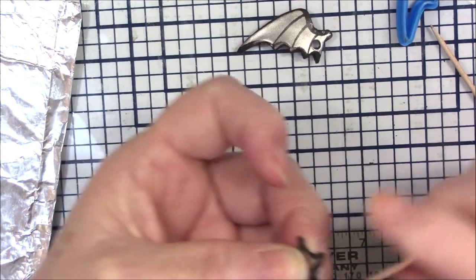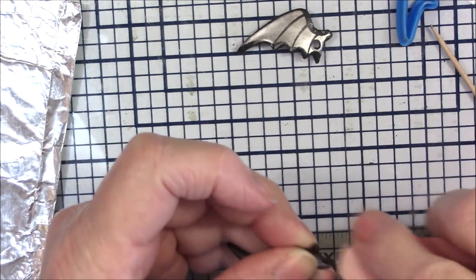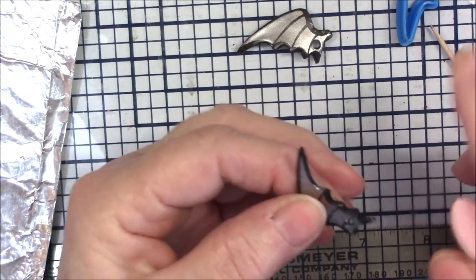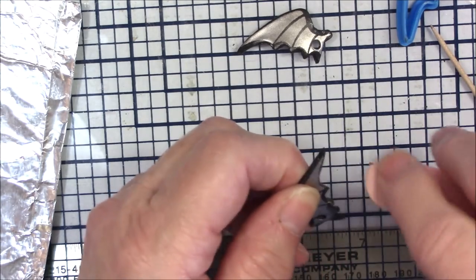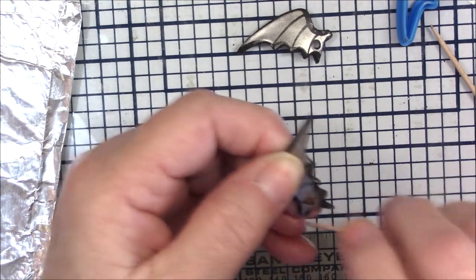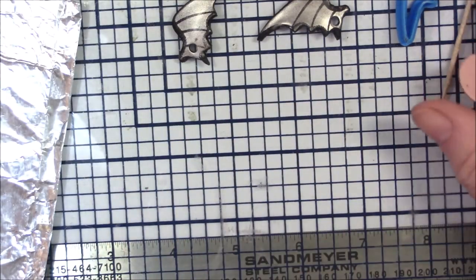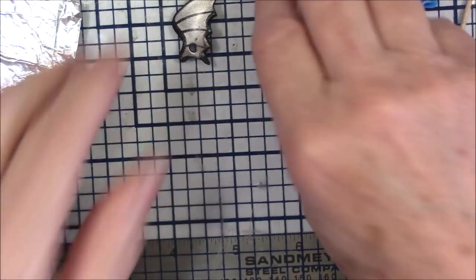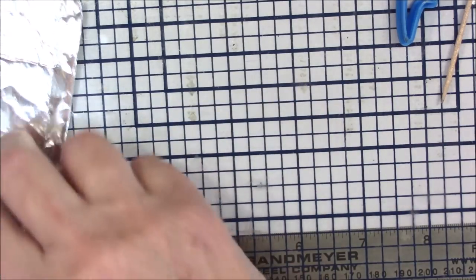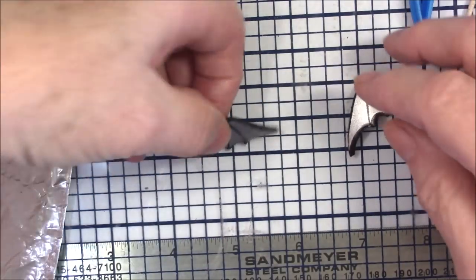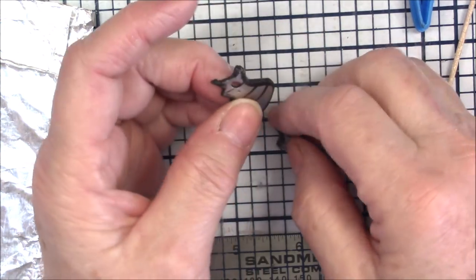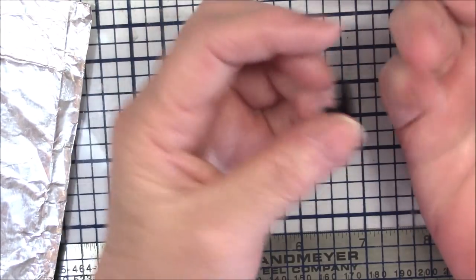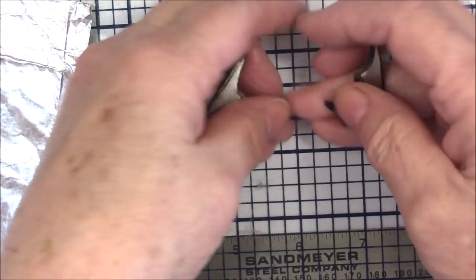Okay, now what I'm going to do, and I'm not going to do this on camera because you've seen me do this enough, I'm going to go ahead and coat this with resin. And you know I'm going to coat the front and the back and then I will be back and show you the finished earrings.